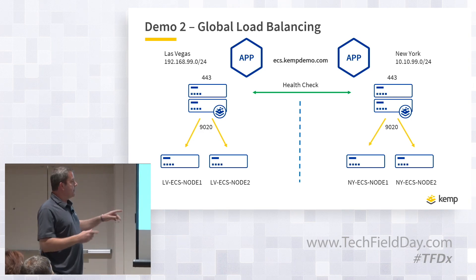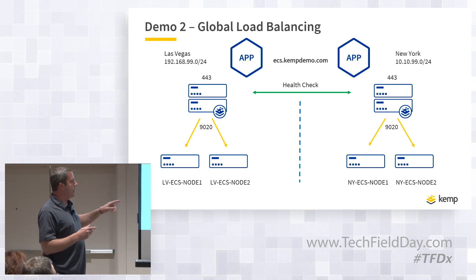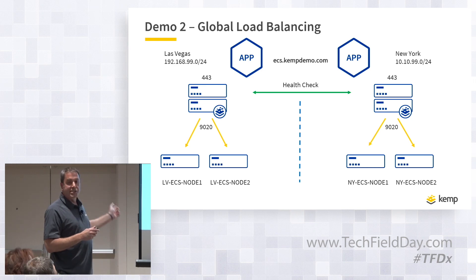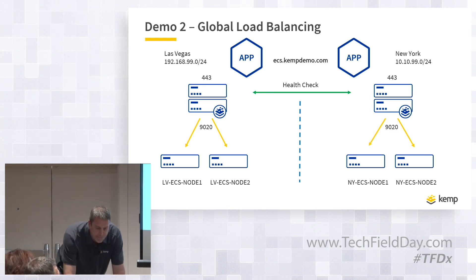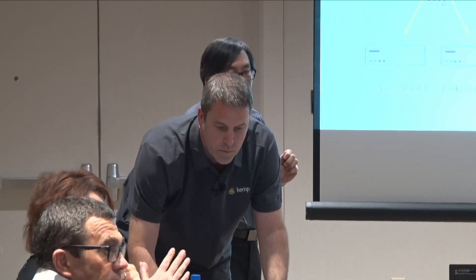The ECS environment typically would have a replication group so the data is the same across sites, enabling failover. In this demo environment, I don't have a replication group — I wanted unique buckets on each side so we could clearly see where we're connecting to. This goes back to the earlier question about consistency: there's back-end work done within ECS to ensure replication if configured. S3 is eventually consistent so your application has to know where to expect data, but ECS is strongly consistent, so you don't have to do that work. We're also working on hashing and algorithms to provide consistency for S3.